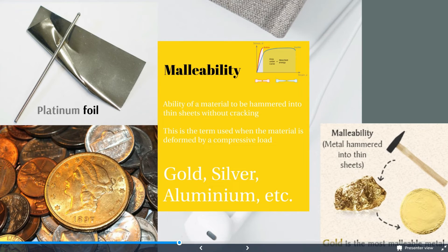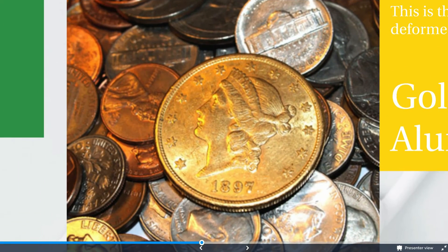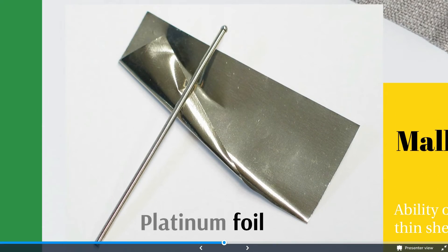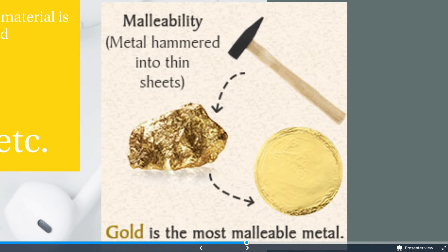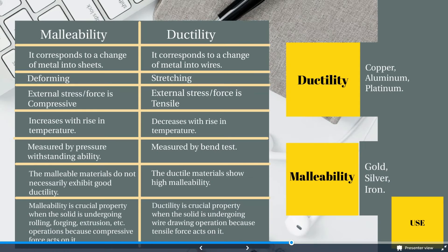Malleability is the ability of a material to be hammered into a thin sheet without cracking. This is the term used when the material is deformed by a compressive load. Gold, silver, aluminium, and iron are all examples of malleable materials. Here you can see images of coins, platinum foil, and gold formed into different shapes. Gold is the most malleable material.